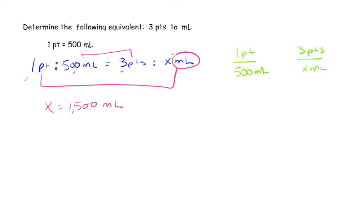For this one, to solve it, we cross multiply. 1 times x is x, 500 times 3 is 1500. And we still get our label by what is next to x. So our answer is 1500 mL.